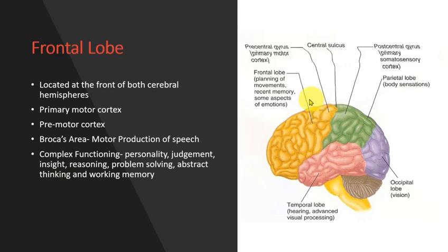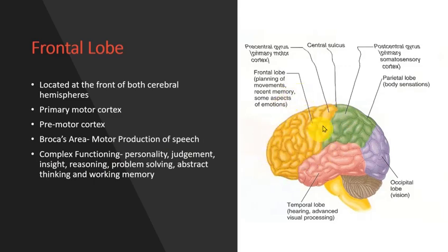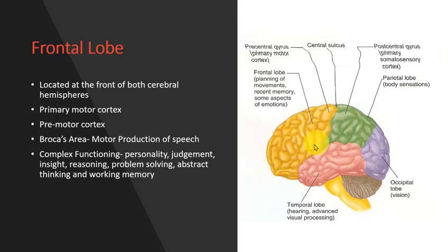The frontal lobe also contains Broca's area, a famous region in the brain useful for motor production of speech. In terms of function, the frontal lobe is responsible for personality, judgment, insight, reasoning, mathematical reasoning, problem solving, abstracting, and working memory. The frontal lobe is very important — reasoning and intelligence are located in the frontal lobe, and our personality is also encoded in the frontal lobe.